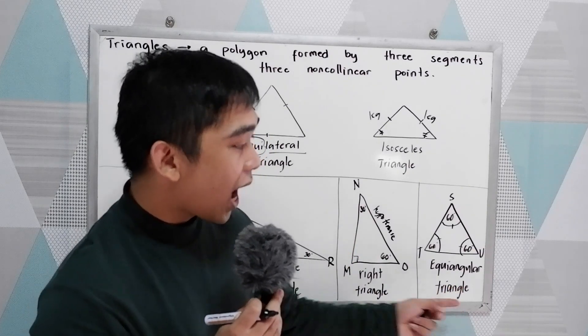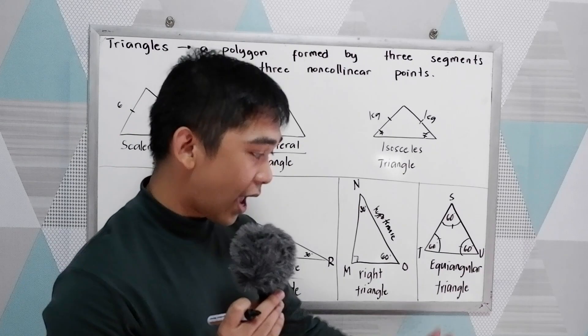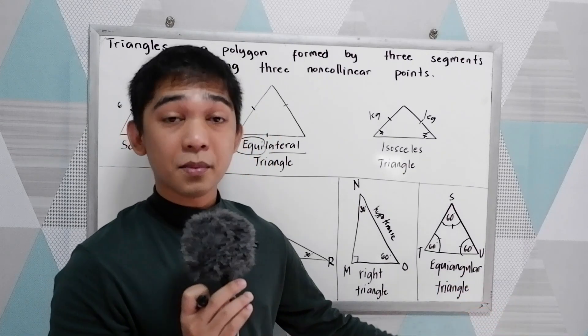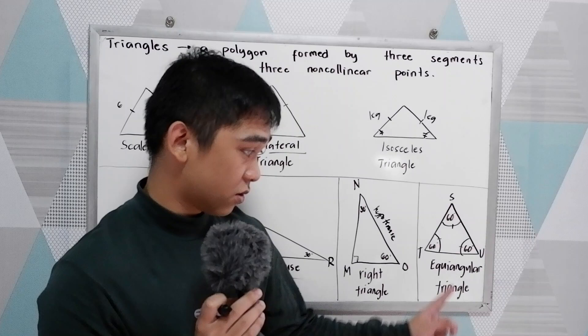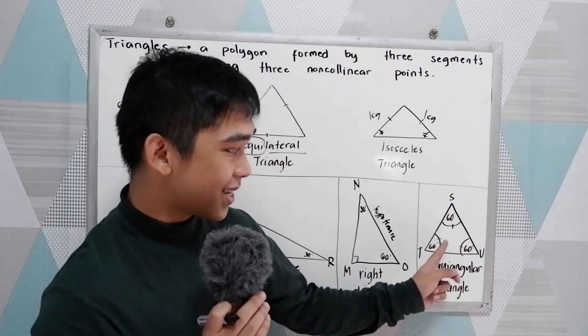And we have the equiangular triangle. Equi means equal, angular means angle, so equal angles. Example is 60, 60, 60.